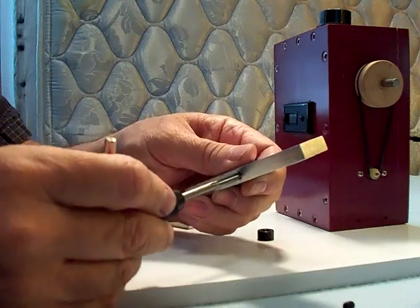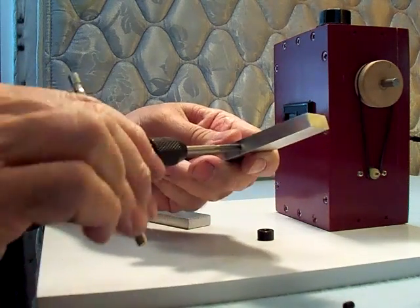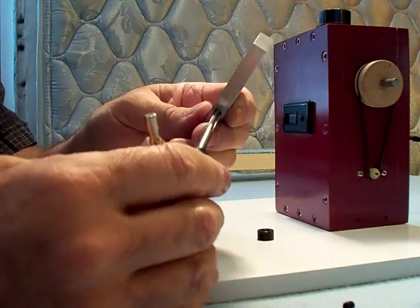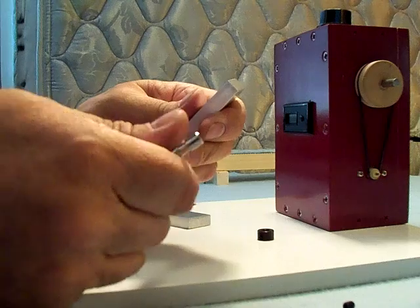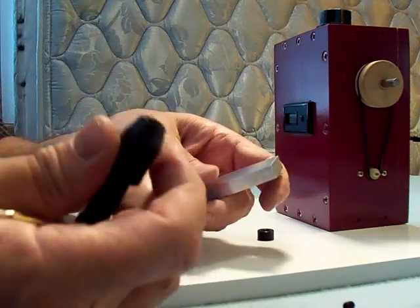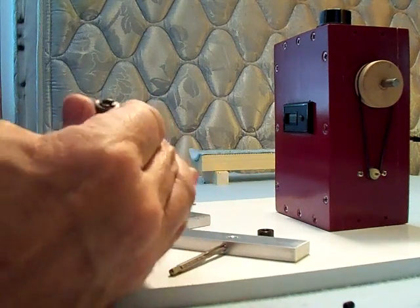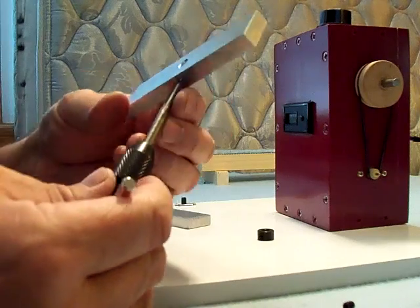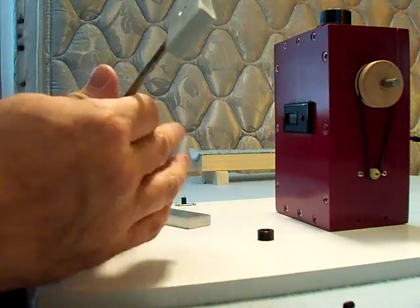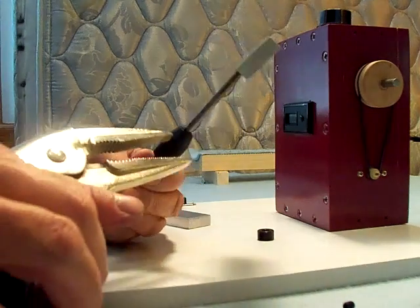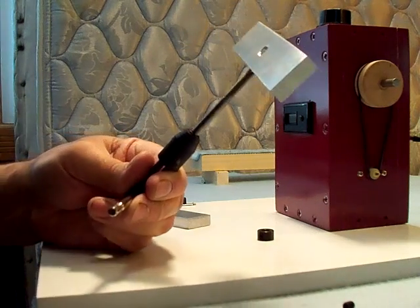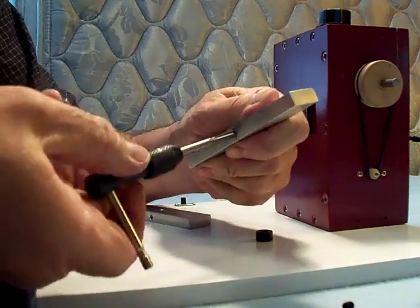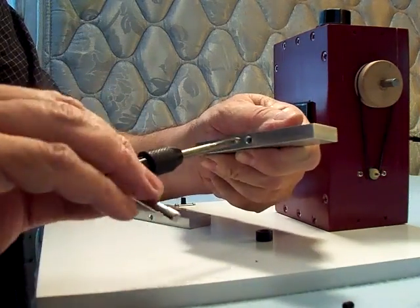So I'm going to tap the hole for the 10-32 set screw to hold the bobbin holder onto the shaft. The collar on my thing is coming loose, tighten it up. Back it down a little bit just to get rid of some of the shavings.